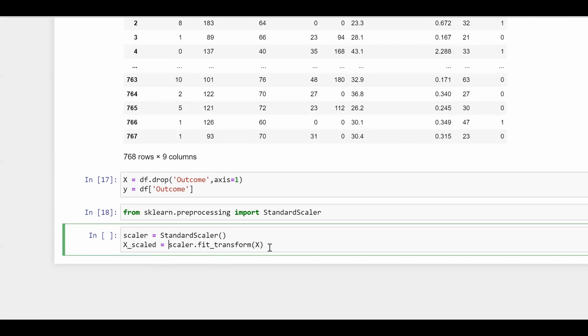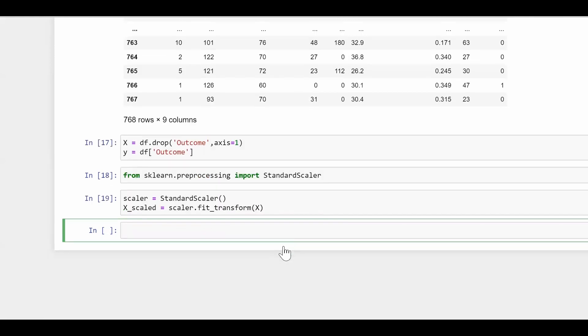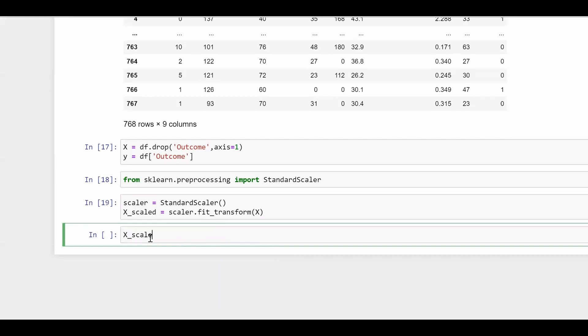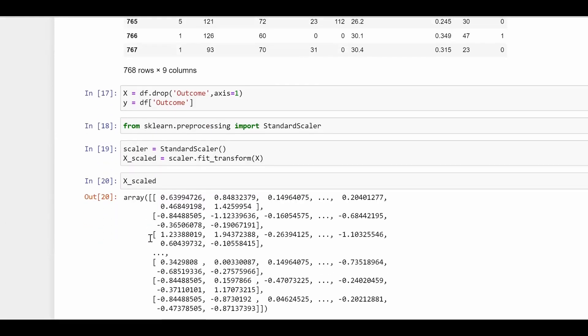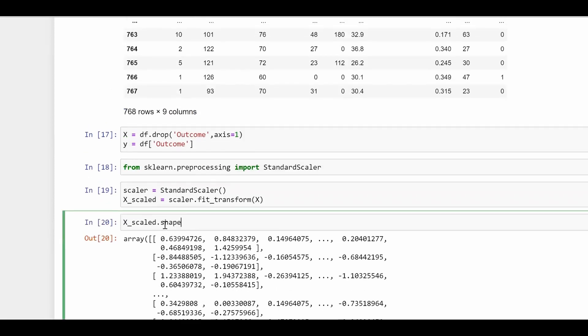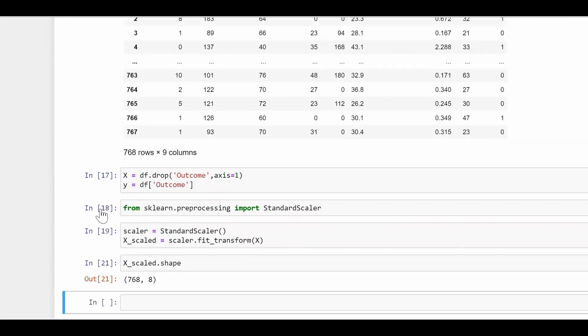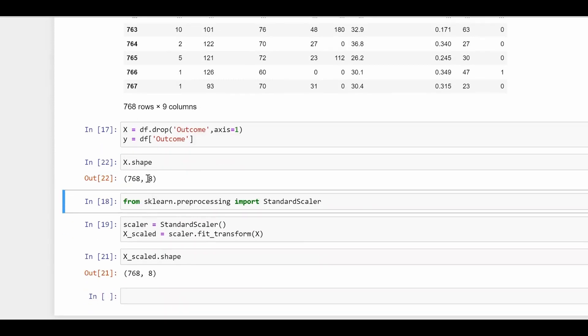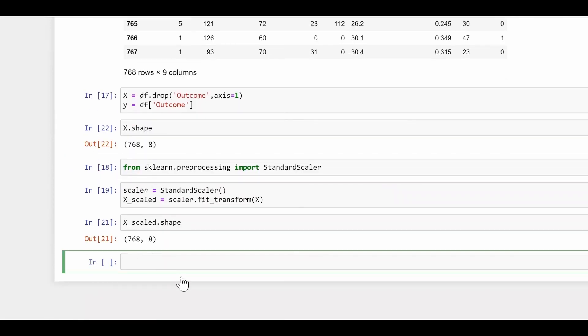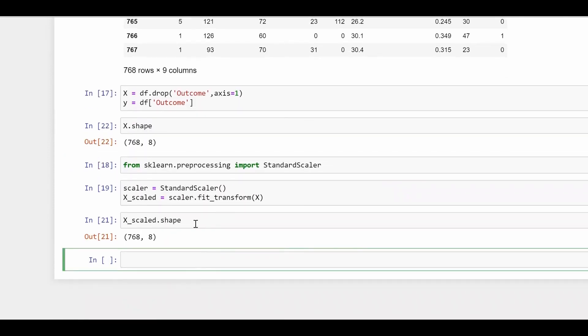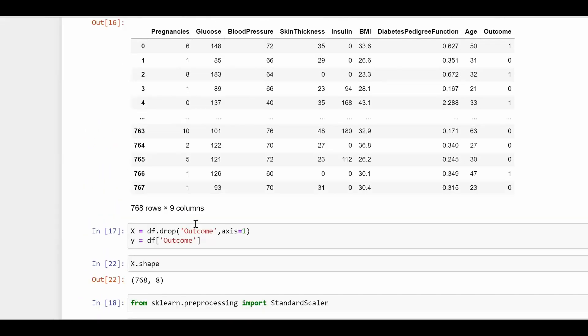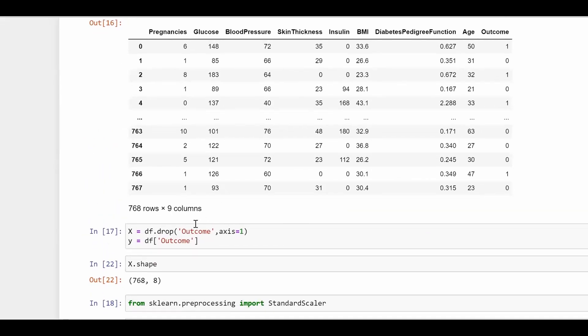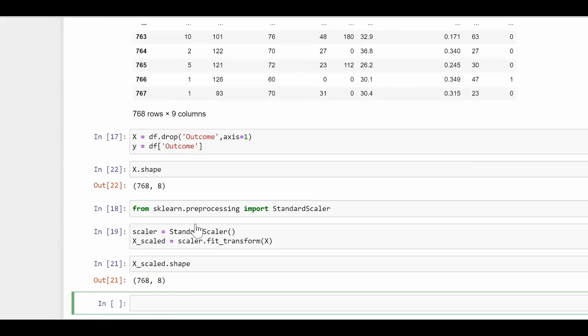So scaler.fit_transform and eventually I'll get my scaled x. So I'll just write a variable x_scaled. Run it. Now if you want to see, it looks like this because this is a numpy array. But if you want to check, you can just say shape of x_scaled. And if I just take my x and say x.shape, you'll get it is having the exact shape: 768 rows with eight columns.